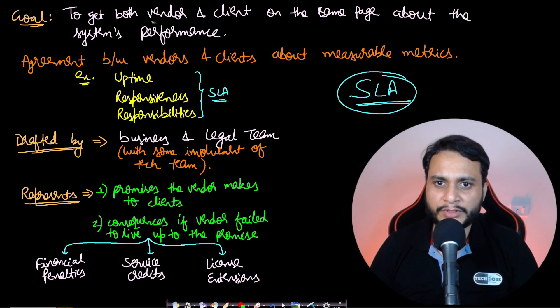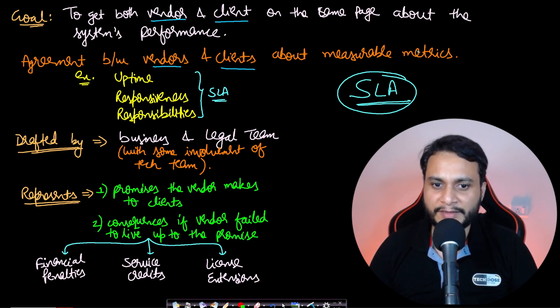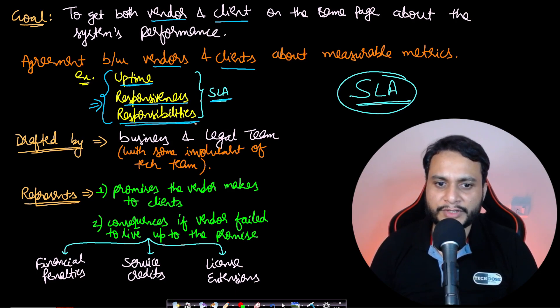So the goal here is to get both the vendor and the client on the same page about the system's performance. Agreement between the vendors and clients about the measurable metrics have to be made, and these are mentioned in the SLAs, which is the service level agreement. Some of these agreements I have just mentioned: uptime, which is equivalent to your availability; then you have responsiveness, which can be compared to waiting time and latency; then you have what responsibilities that the vendor will be handling for the client. These all things will be mentioned in the SLAs.